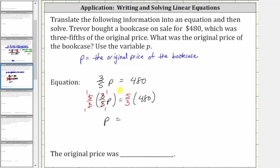p is equal to five-thirds times 480. Let's write 480 as a fraction with a denominator of one. Simplifying before multiplying, three and 480 share a common factor of three. Simplifying out the common factor of three, three divided by three simplifies to one. 480 divided by three is equal to 160. Notice now we just have five times 160, which is equal to 800.